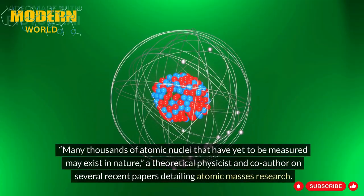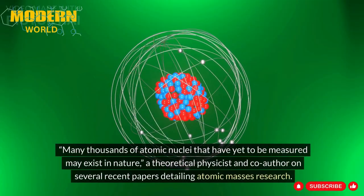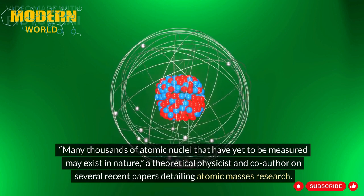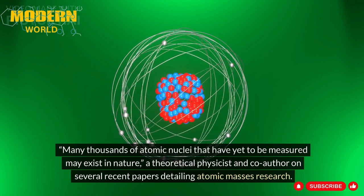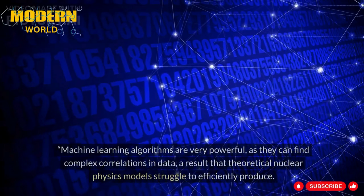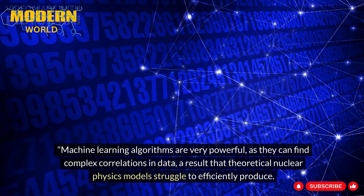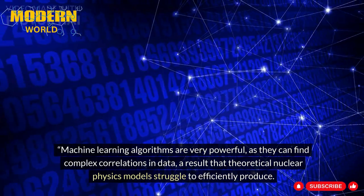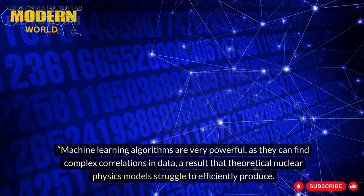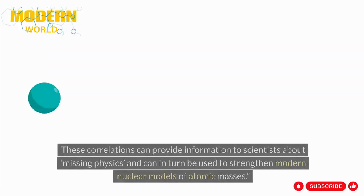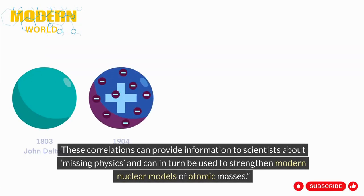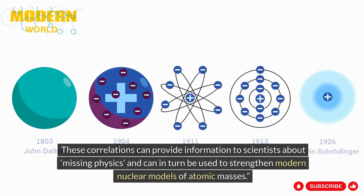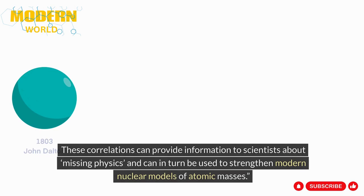Many thousands of atomic nuclei that have yet to be measured may exist in nature. Machine learning algorithms are very powerful, as they can find complex correlations in data — a result that theoretical nuclear physics models struggle to efficiently produce. These correlations can provide information to scientists about missing physics, and can in turn be used to strengthen modern nuclear models of atomic masses.